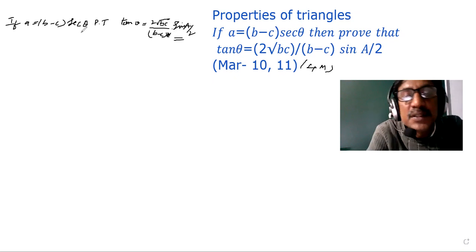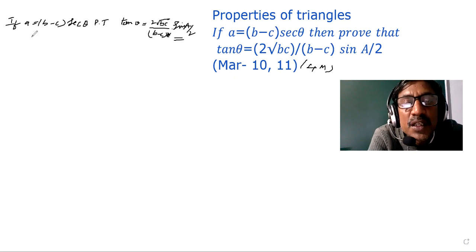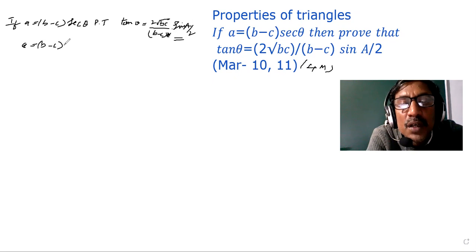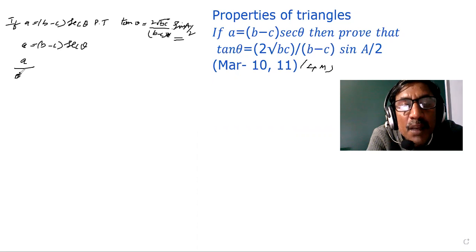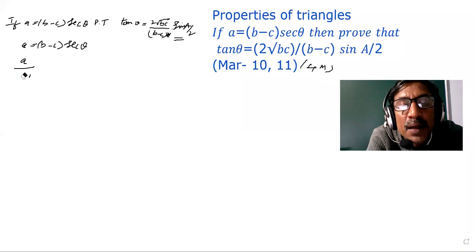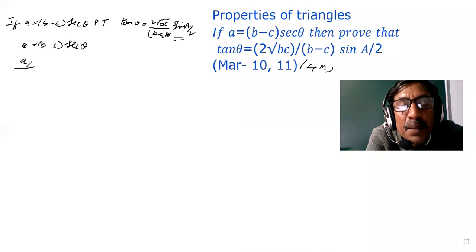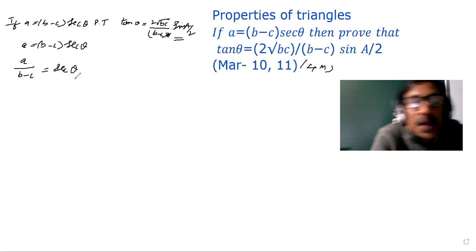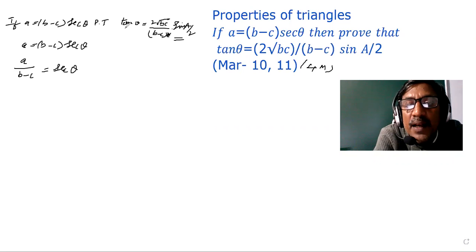Let's see what we have here. We can find sec theta: since a is equal to (b minus c) into sec theta, we divide both sides to get A divided by (b minus c) is equal to sec theta. So sec theta equals A by (b minus c), and from this we can find tan theta.